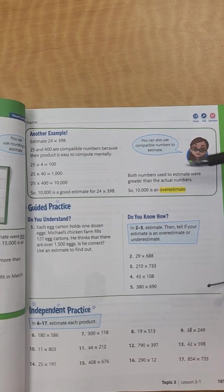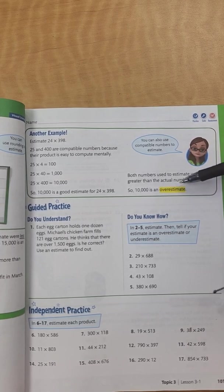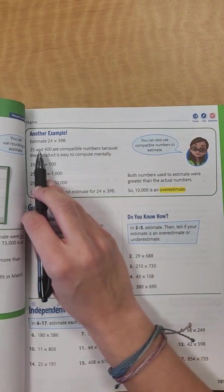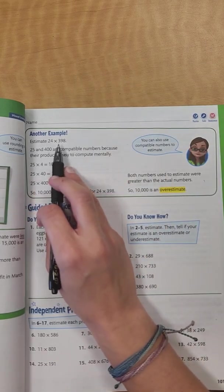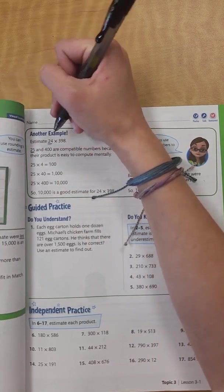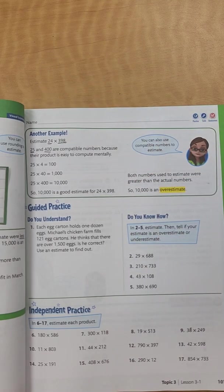Both numbers used to estimate were greater than the actual value, so 10,000 is an overestimate. So it's going to be more than the actual, because we rounded, or we went a little bit higher than both of these numbers. Hopefully you're able to see that. We went a little higher with 25 and 24, and then with this one, we went a little higher with that.